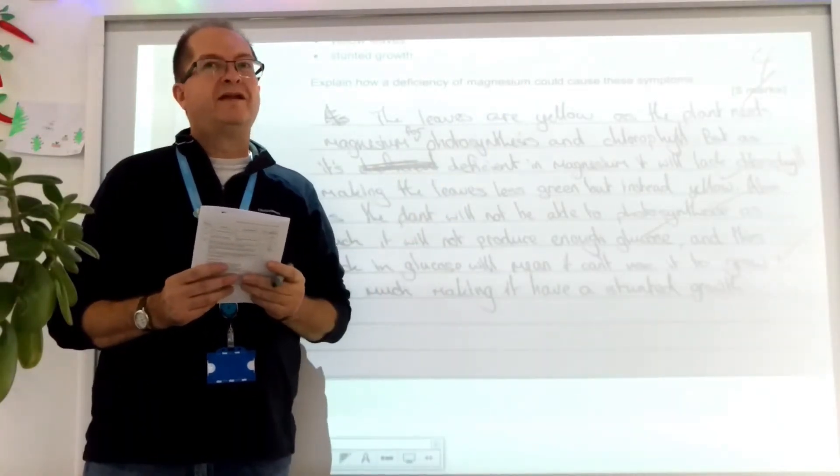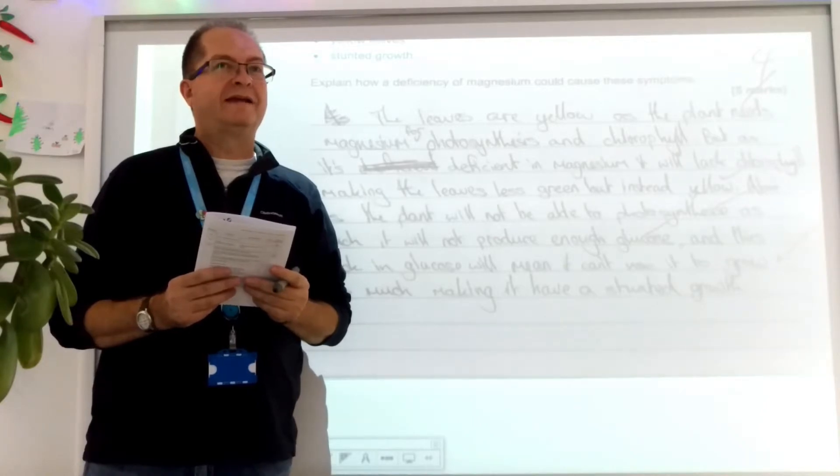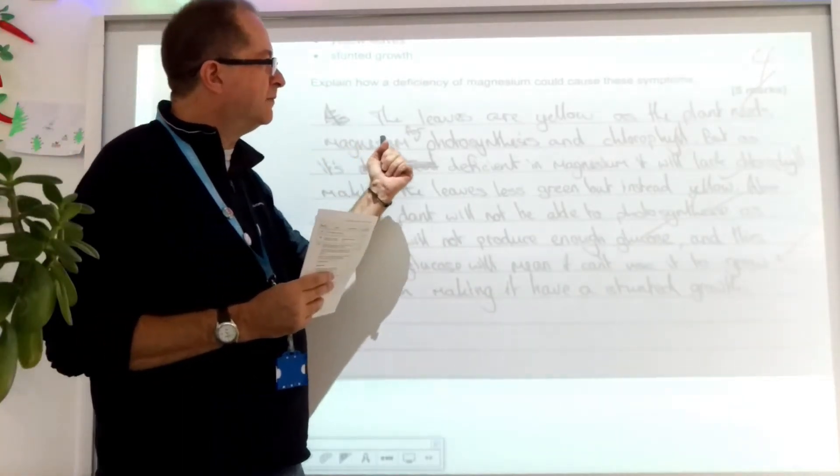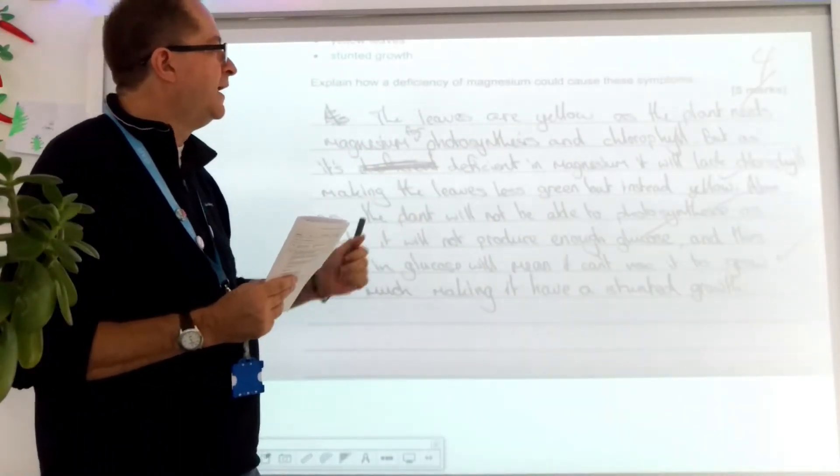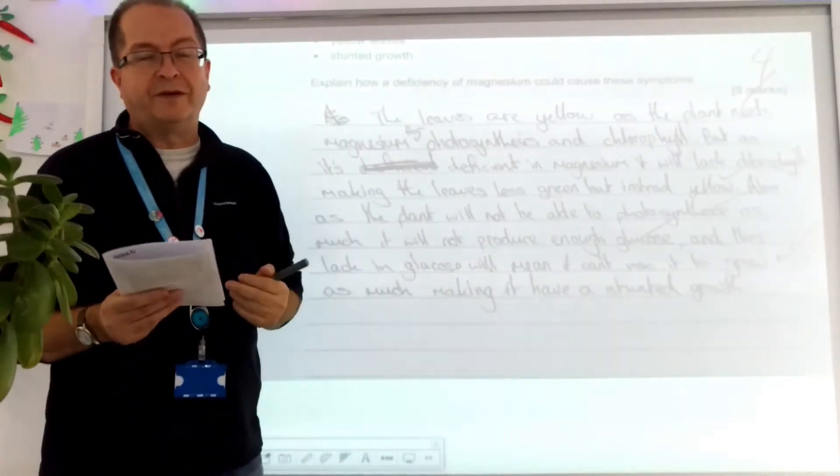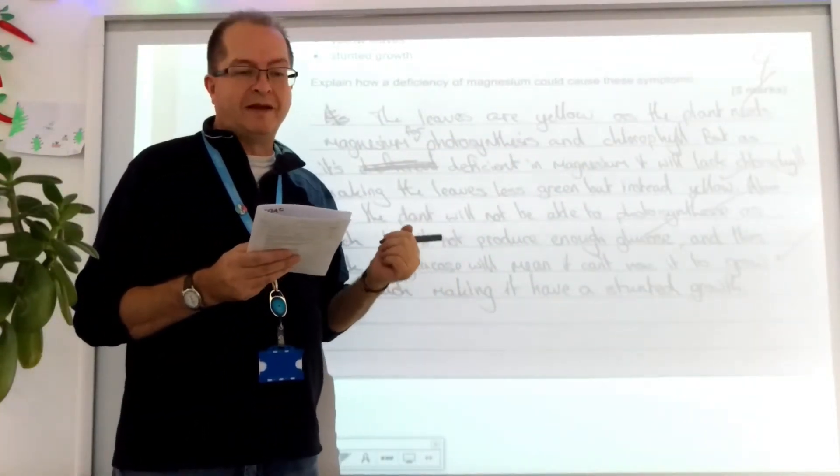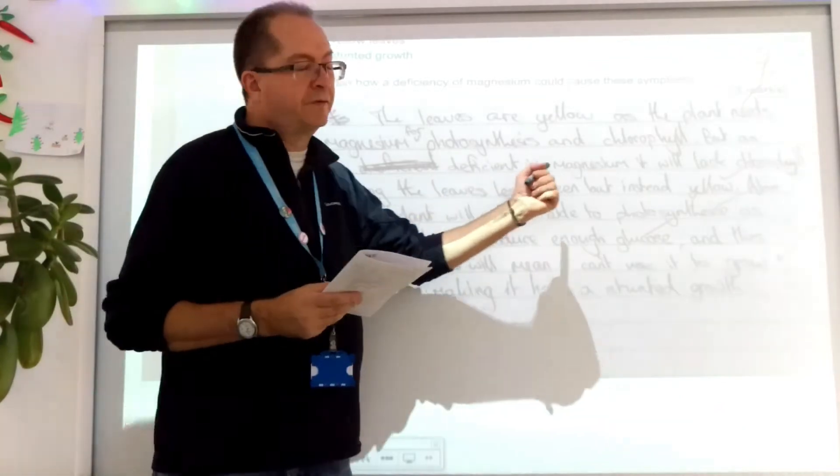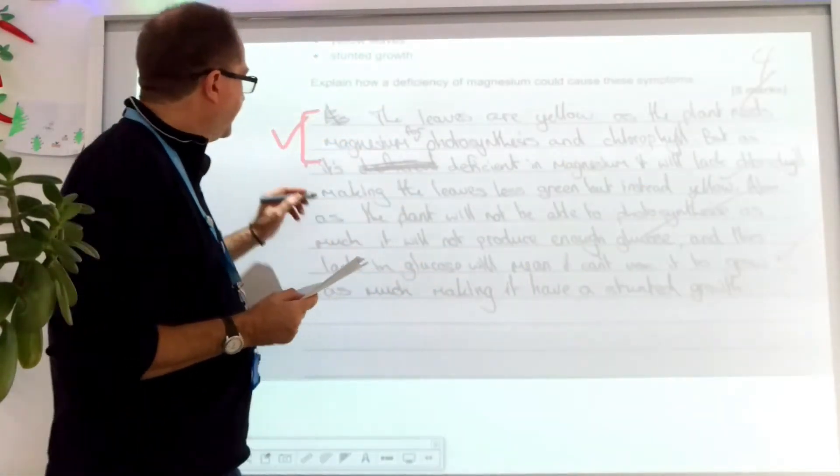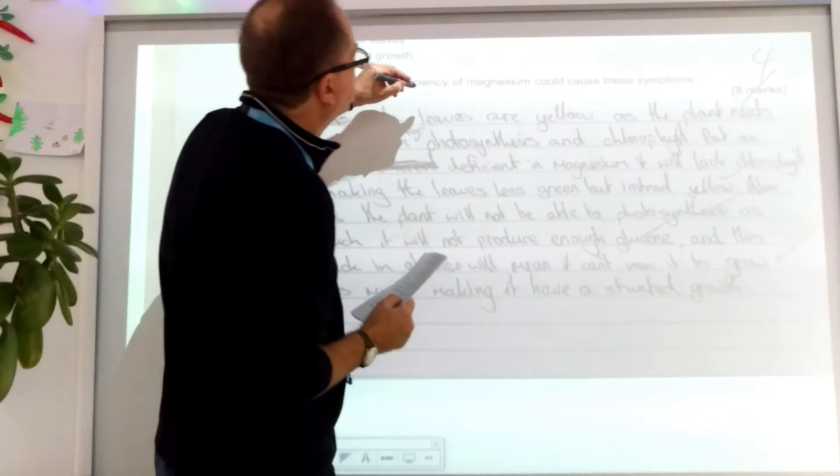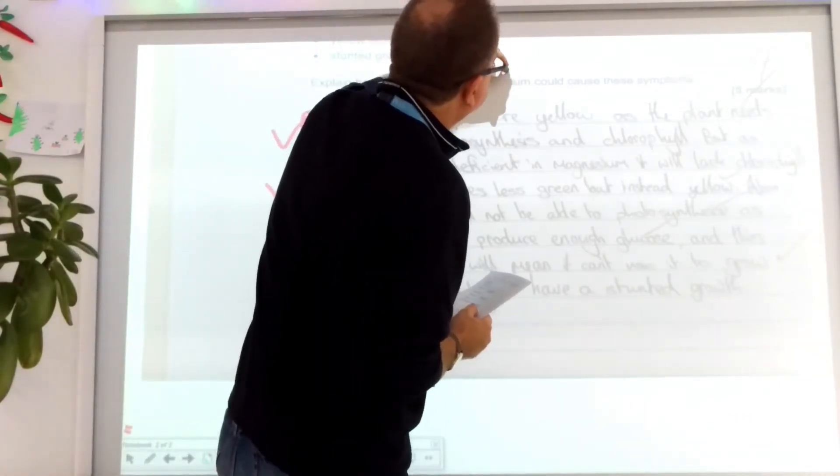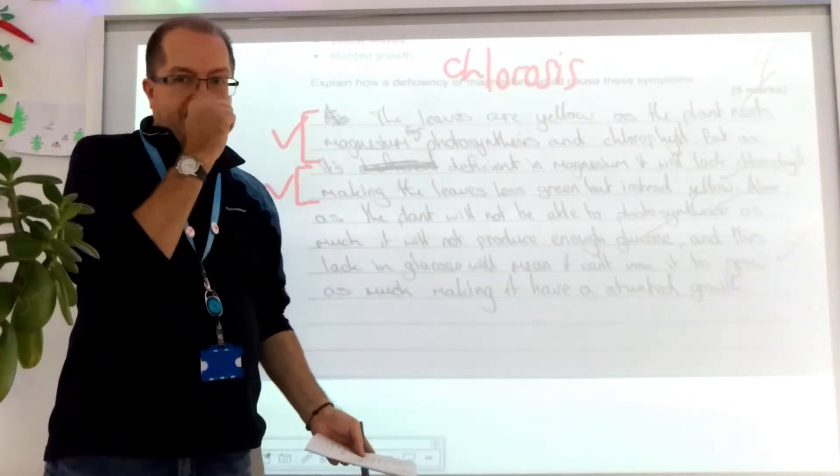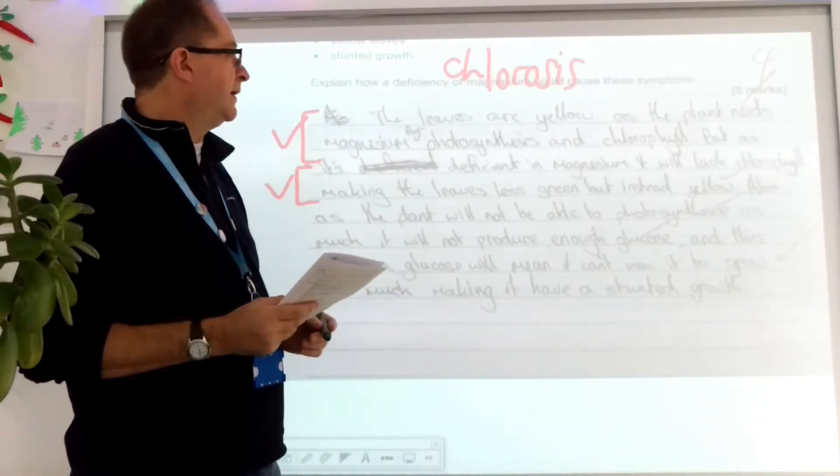Right, the leaves are yellow as the plant needs magnesium for photosynthesis and chlorophyll. If it's deficient in magnesium, it will lack chlorophyll. So they've got that right. They're telling us that without magnesium, the plant can't make chlorophyll. So that's our first mark. It will make the leaves look less green, but yellow instead. That's our second mark, what we call chlorosis. If you can use that word, chlorosis, that means disease of the green, lack of the green, your plant goes yellow. That would be great if you can use that word.